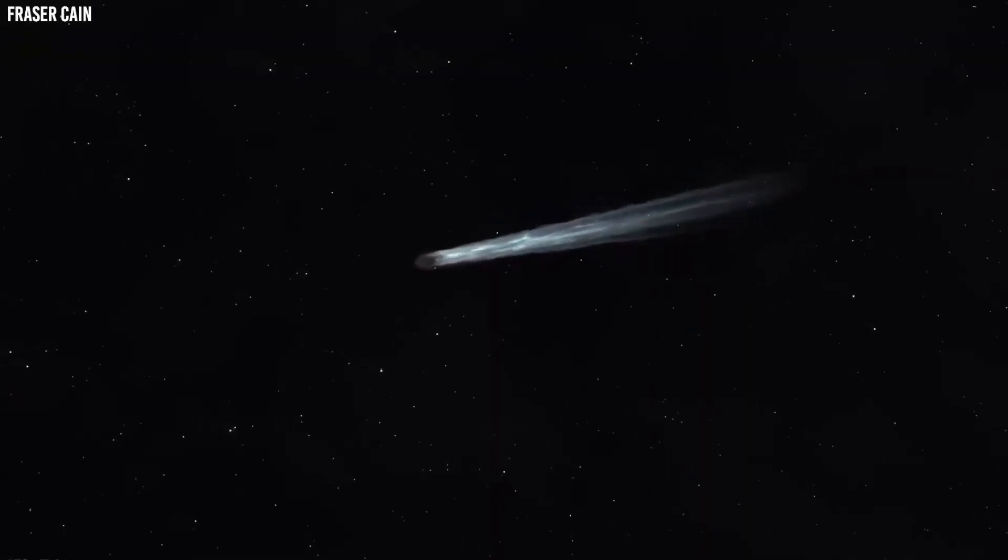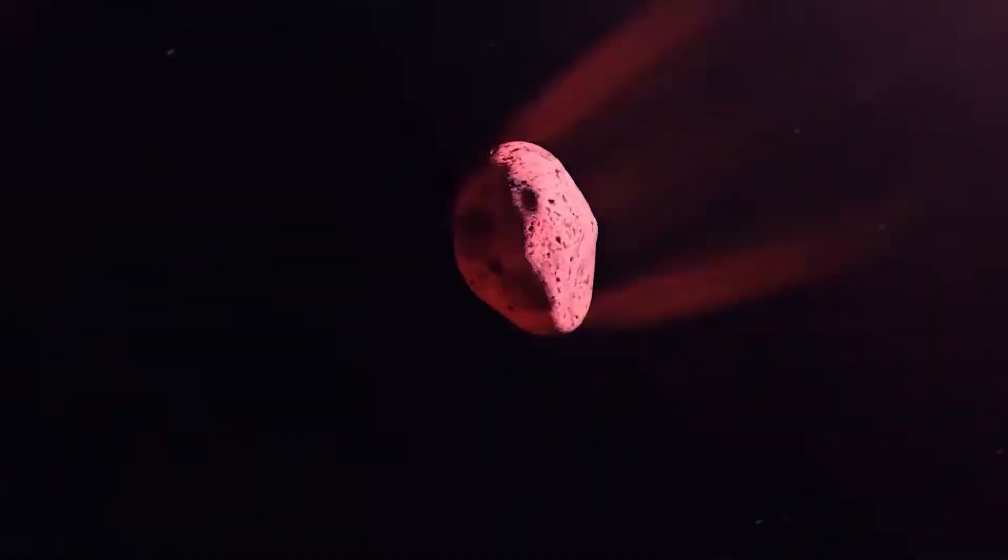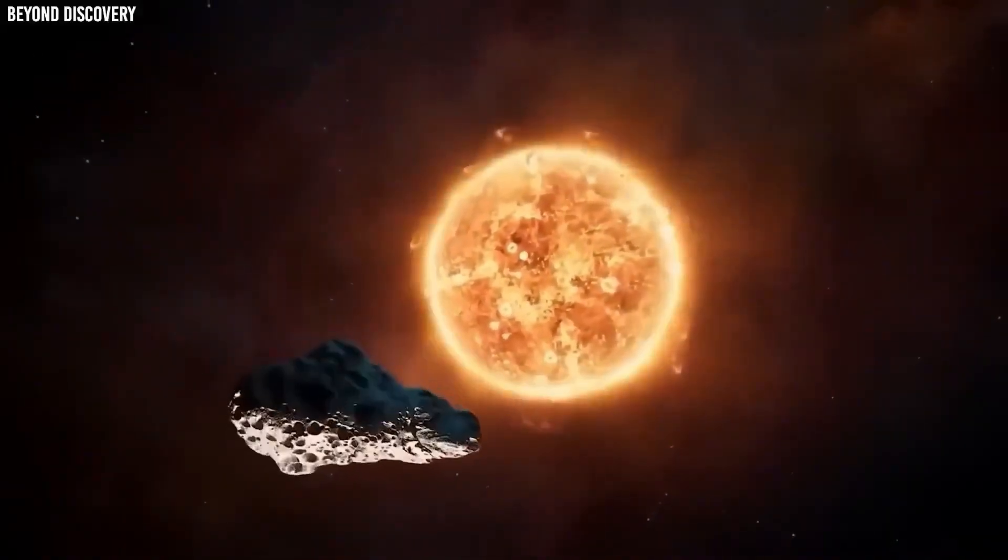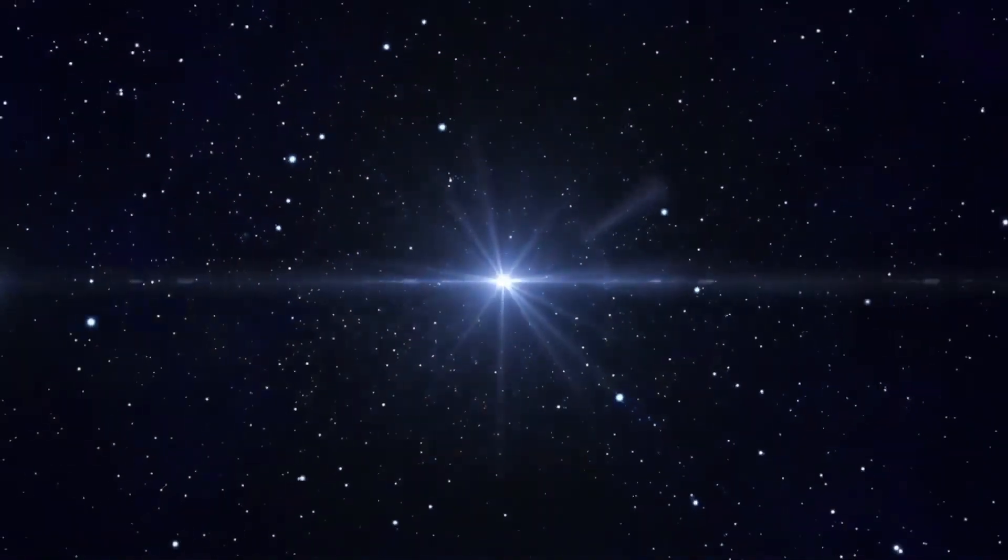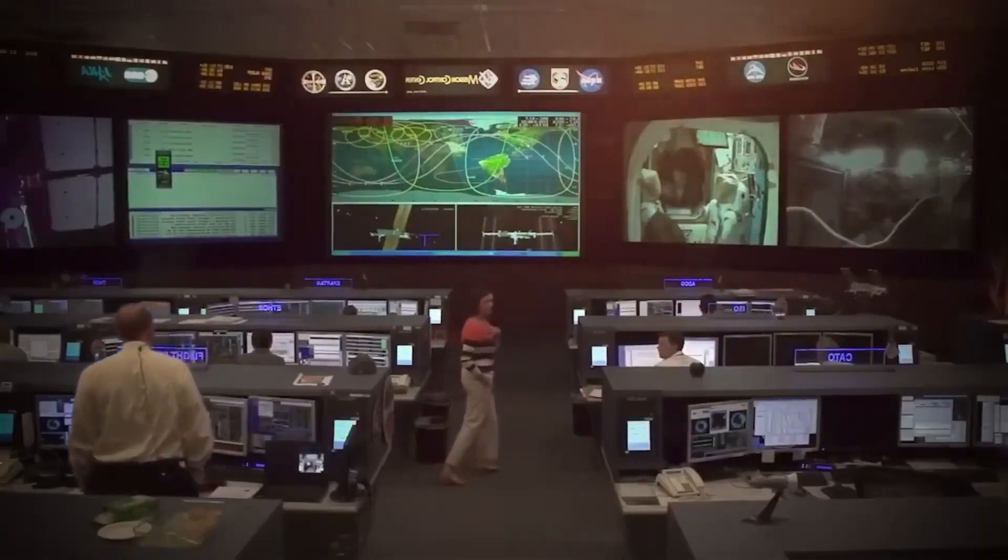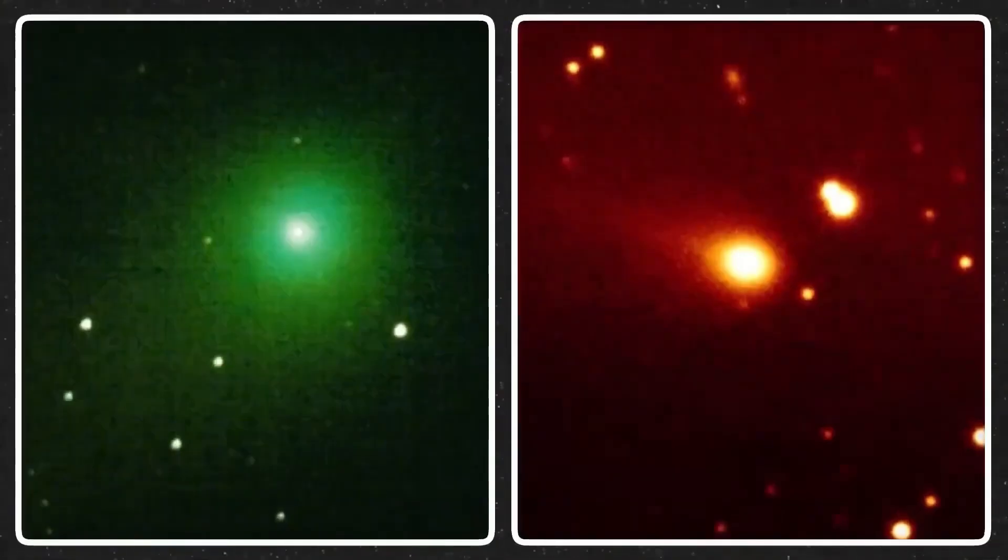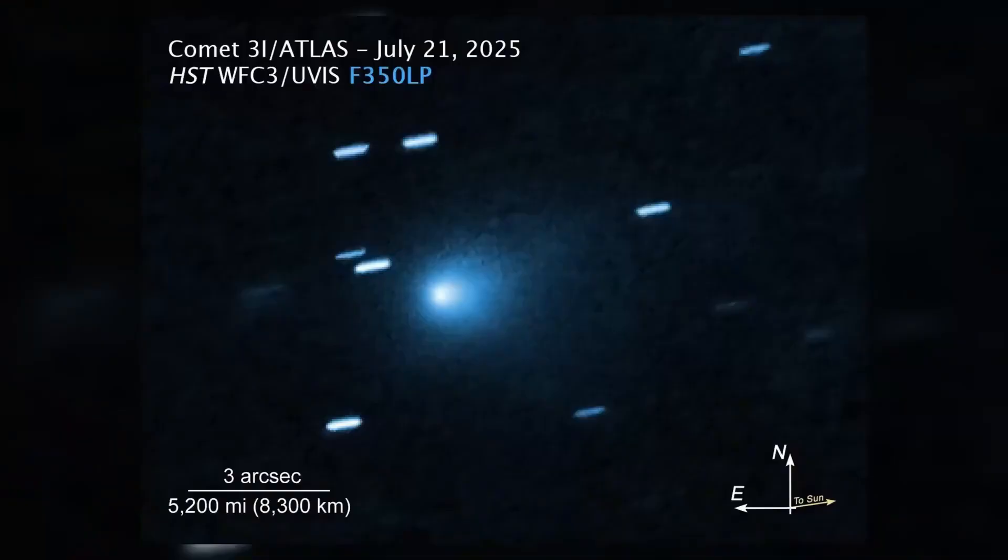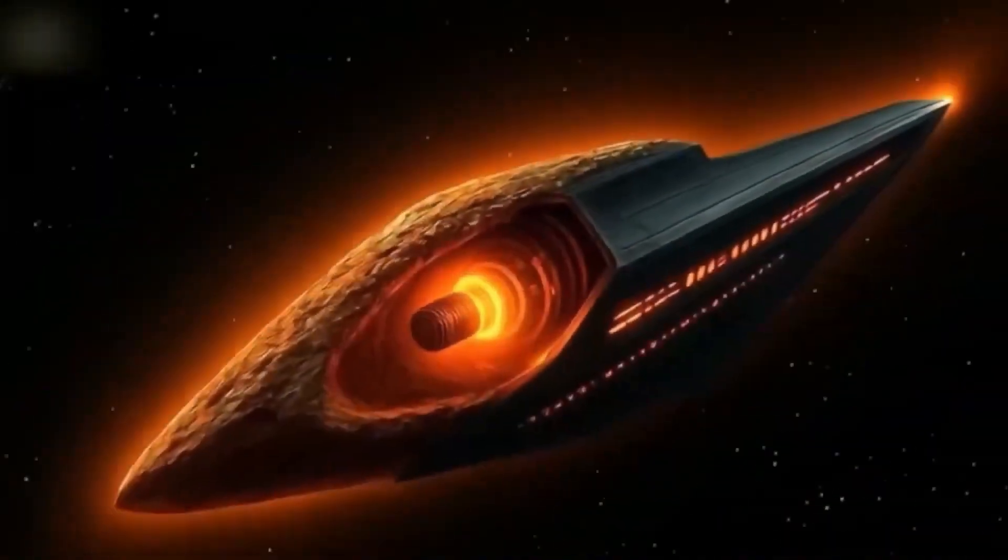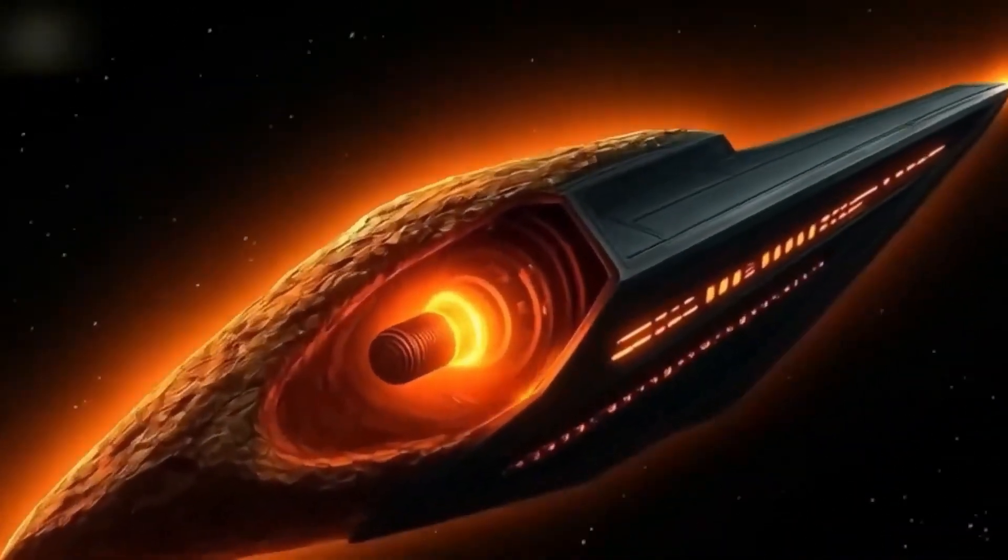December 19th, 2025 has become a date circled in red ink across observatories and newsrooms alike, because for the first time in recorded history, an interstellar object designated 3/Atlas appears to be drifting onto a track that brings it closer to Earth than anyone anticipated, with fresh measurements unsettling astronomers by hinting that its path may be inching toward our planet in subtle but meaningful ways.